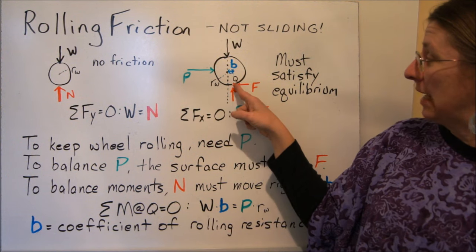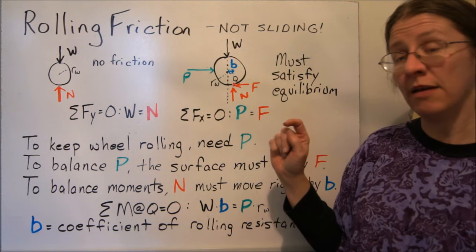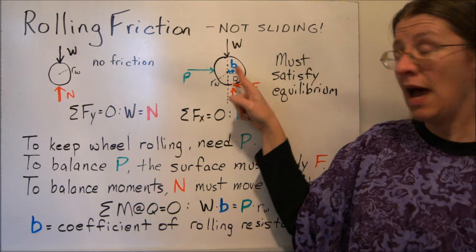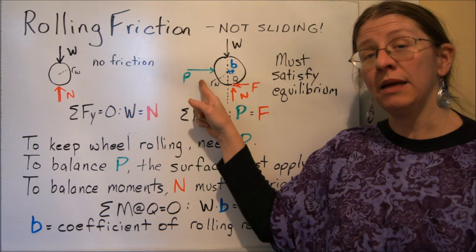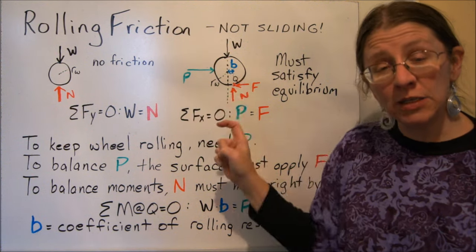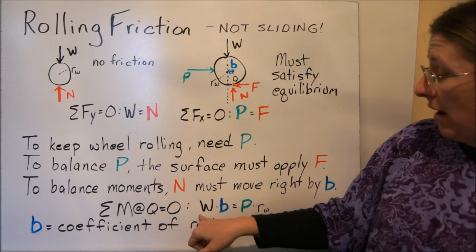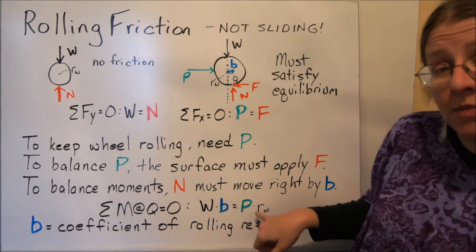So the sum of the forces, if I take it right here where the normal force is applied, if I sum those moments, what I end up with is the weight times this perpendicular distance B, has to be balanced by P times its perpendicular distance, which is the radius of the wheel. So here I have W times B equals P times the radius of the wheel.